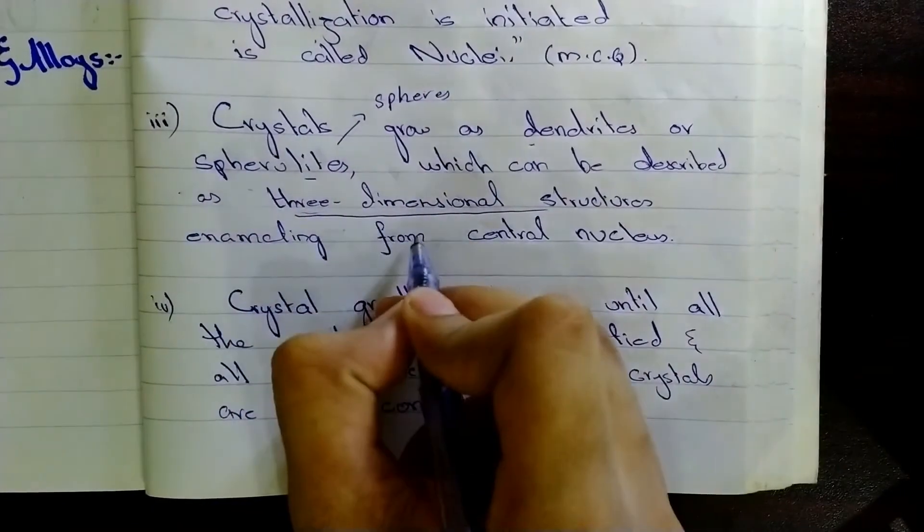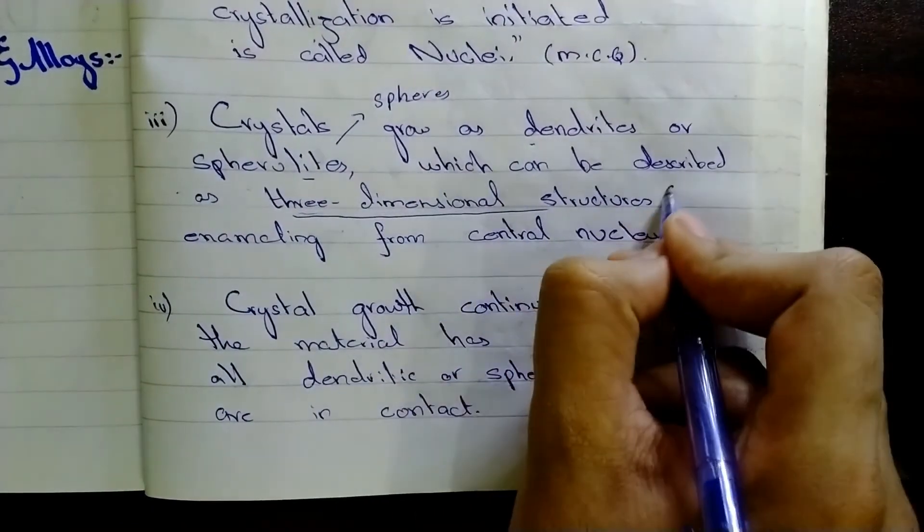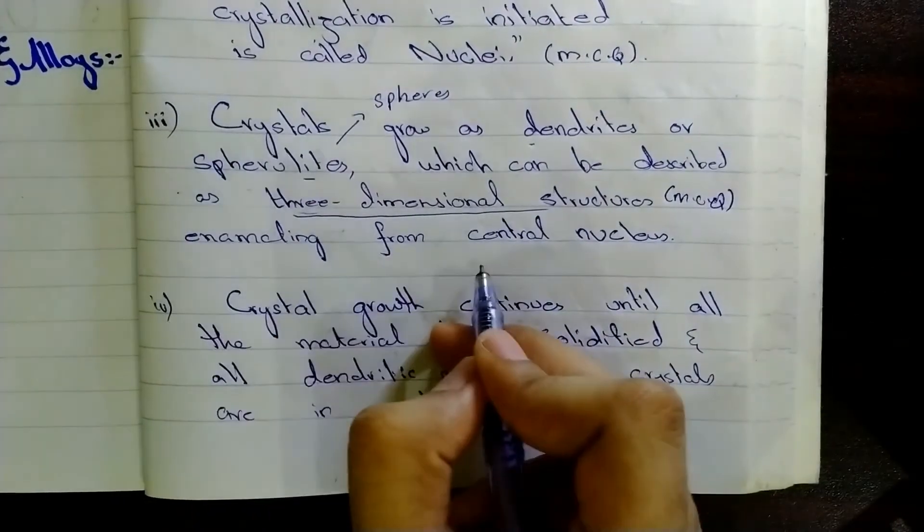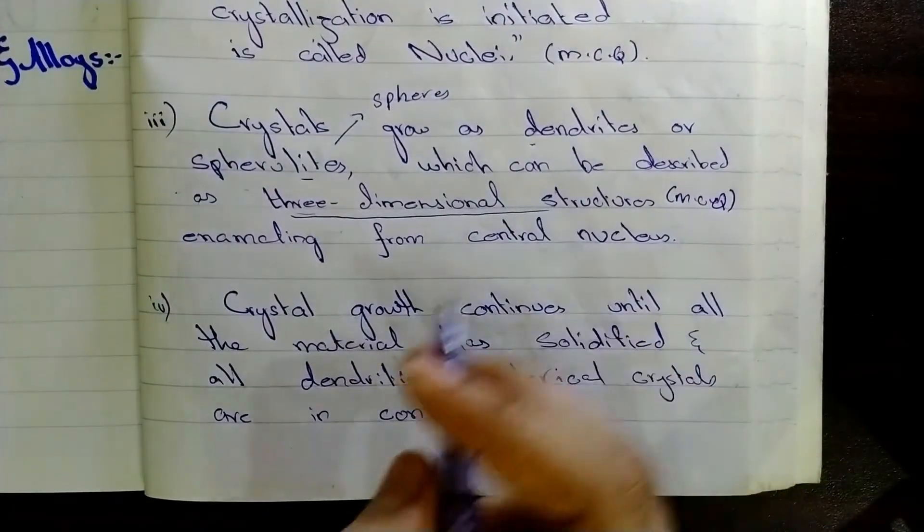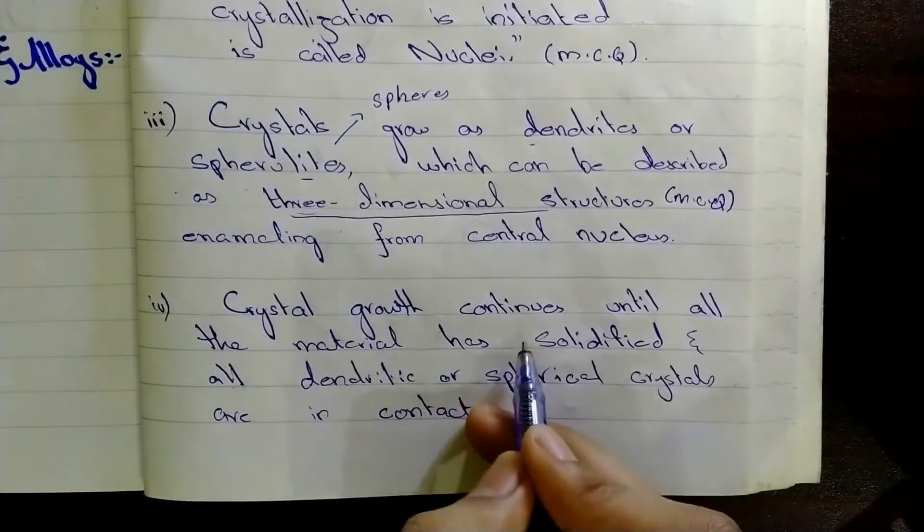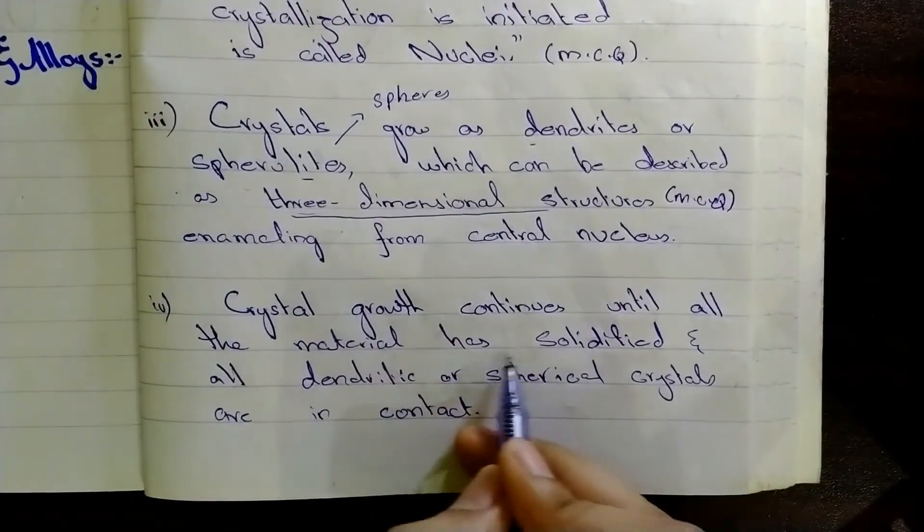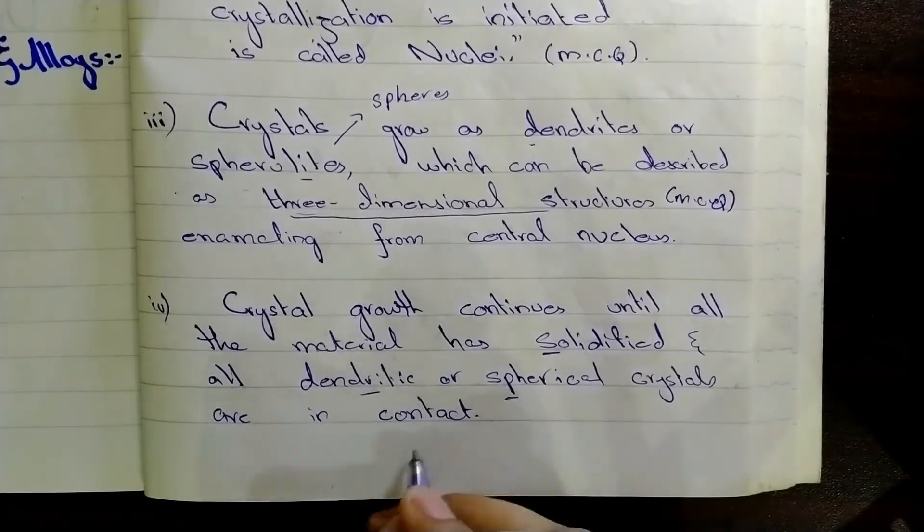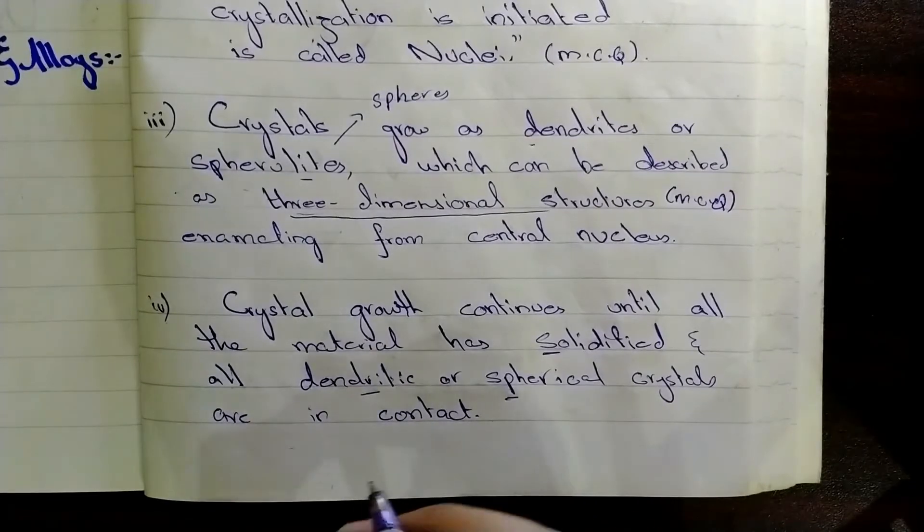Crystals possess three-dimensional structures. This is previously asked in MCQ. Emanating from central nucleus. Now, as the crystals grow, crystal growth continues until all the material has solidified and all the dendritic or spherical crystals are in contact